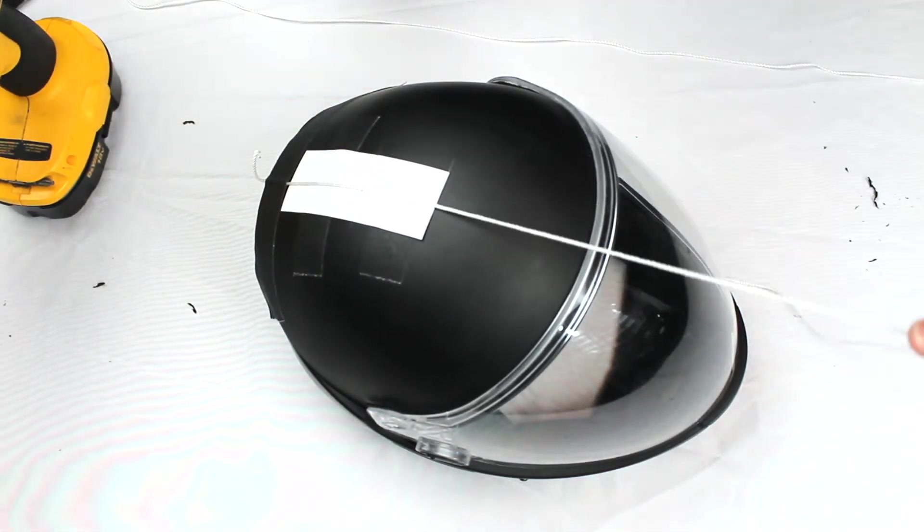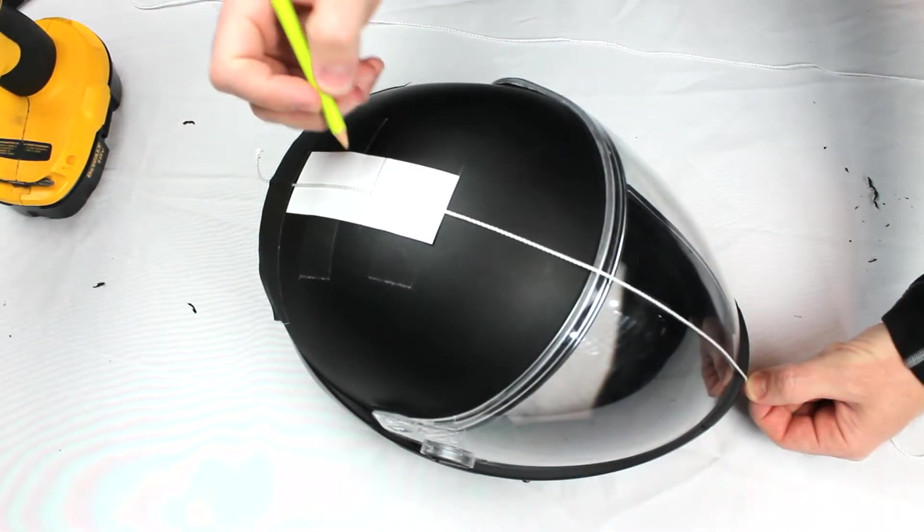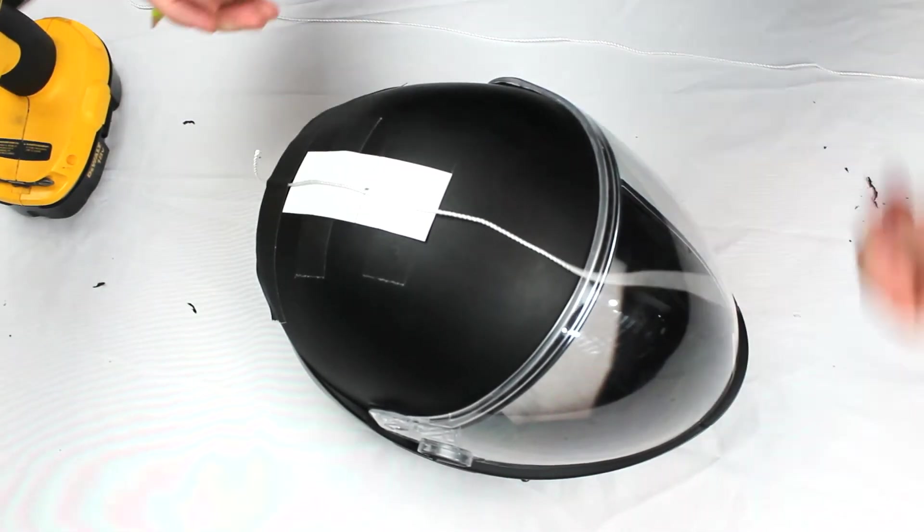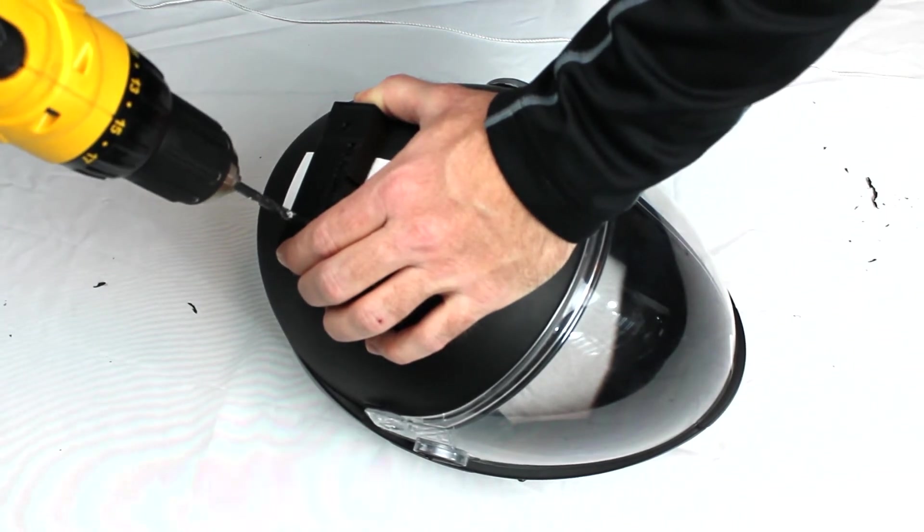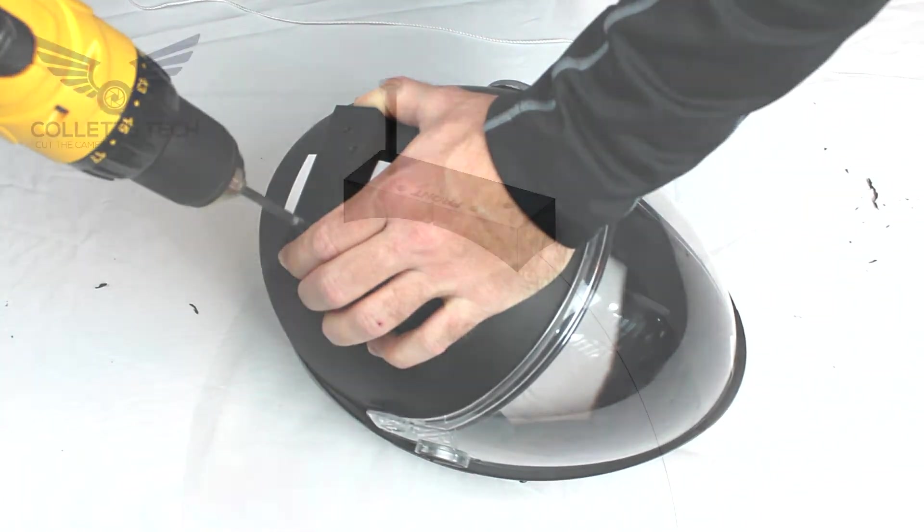Using a string drawn over the helmet, mark the center. It can help to have a second set of hands for this step. While holding the drill jig centered on your line and center mark, use the provided drill bit to drill the first outer hole.